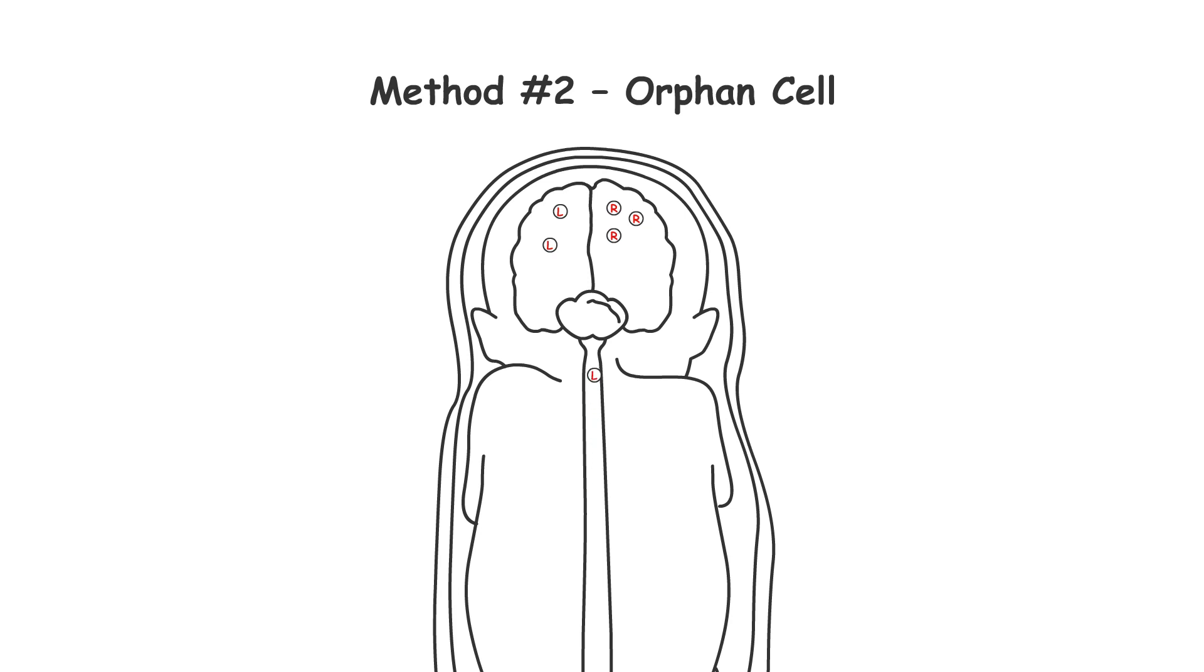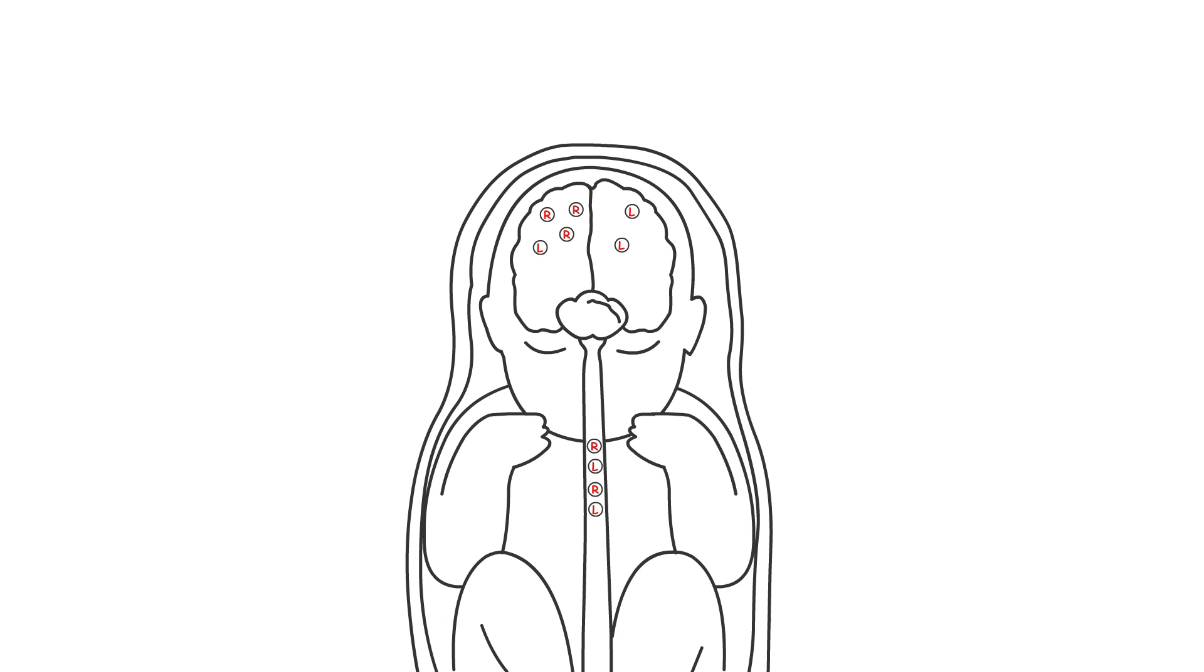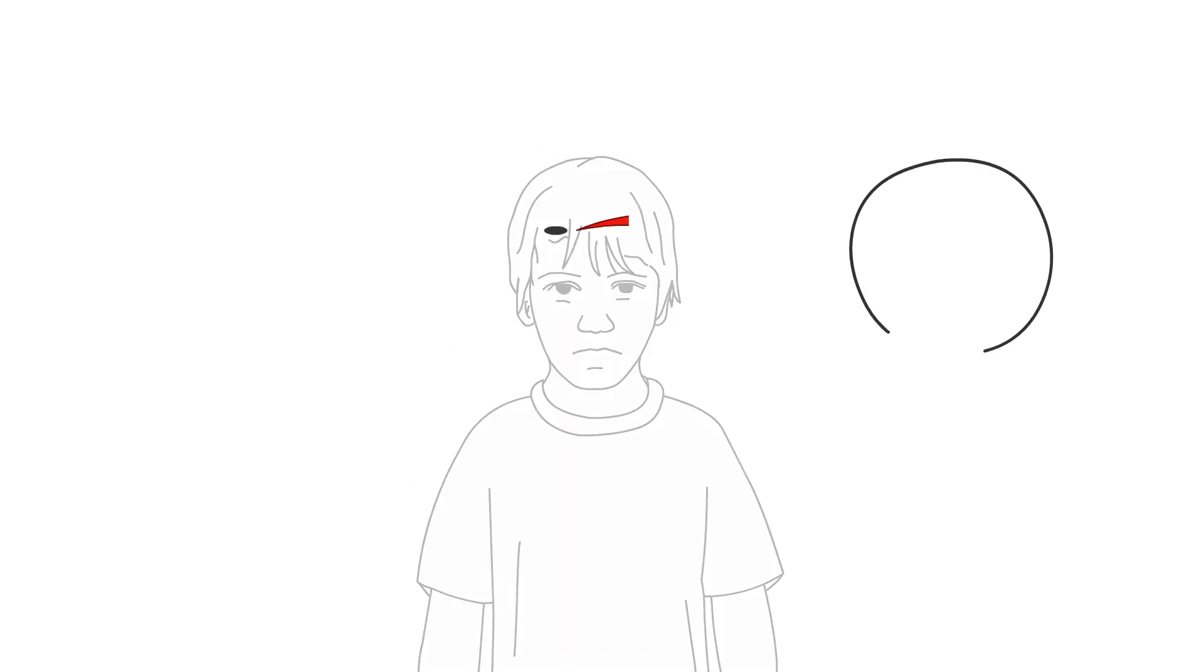But imagine that a stem cell is lost or becomes unattached from the others, and it becomes an orphan cell. Then, let's say, the orphan cell responds to the signal to divide, but because it is not a recognized member of the local group, it fails to respond to the signal to stop dividing.